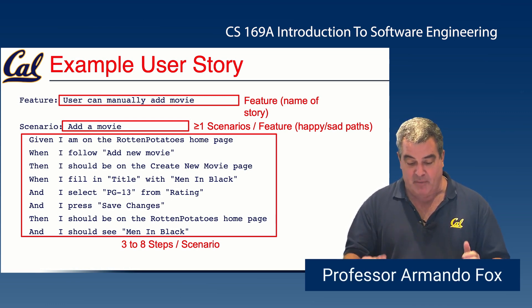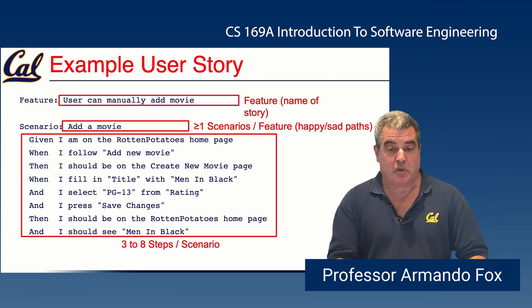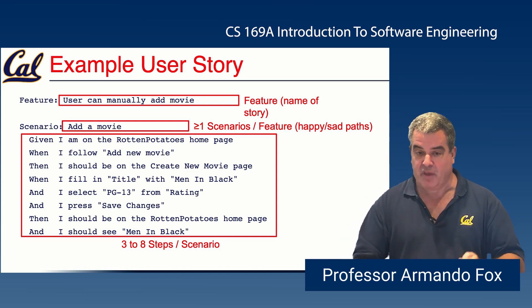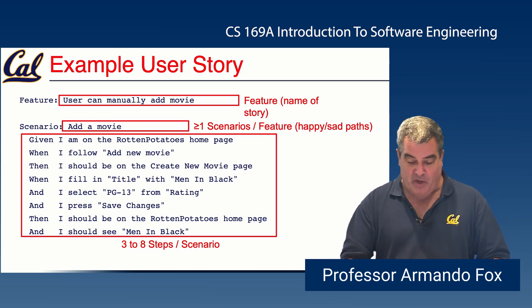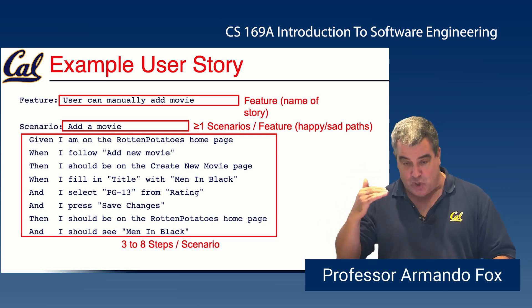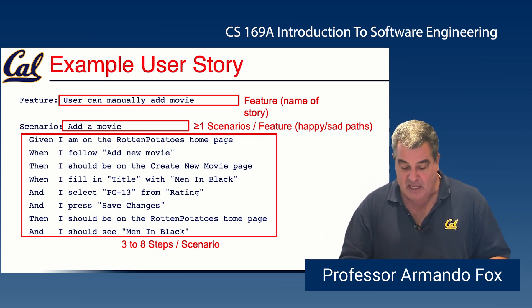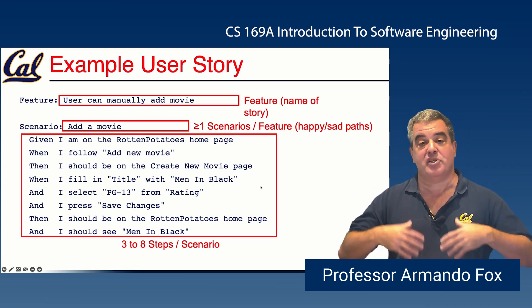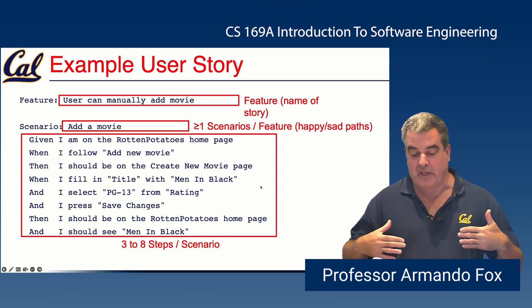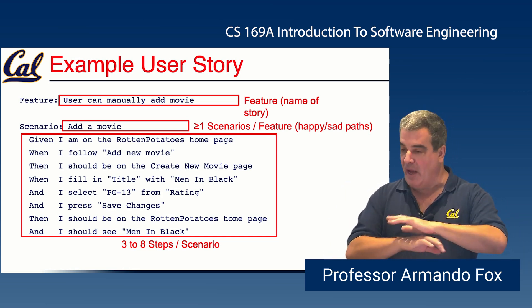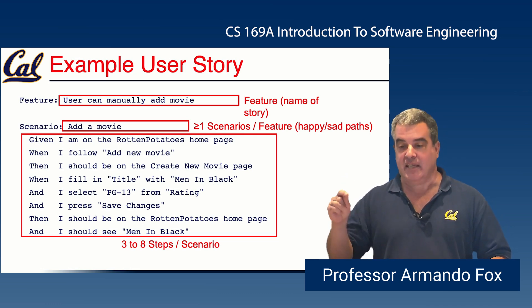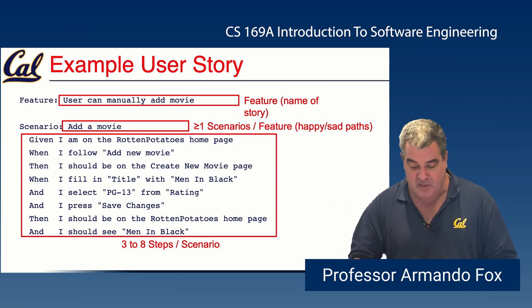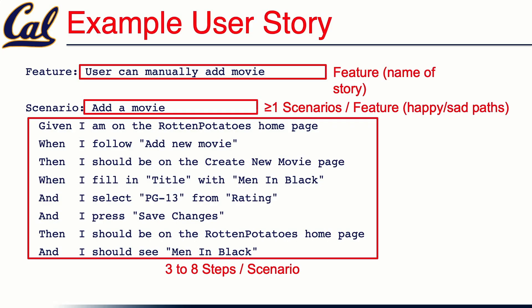The steps describe exactly what the user would do sitting in front of the app. For example: 'given I am on the Rotten Potatoes home page, when I follow Add New Movie, then I should be on the Create New Movie page.' You're scripting what the user would do at a specific level of detail. The goal is that you could give this to a person who knows nothing about the app and they could follow the script and say at the end yes it worked or no it didn't. You have to pick a specific example, which is why getting the specific part right when you create the story saves a lot of time.